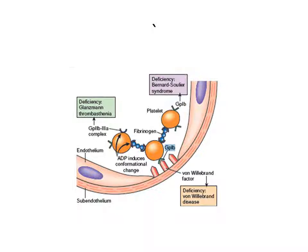In this picture from Robbins, you can see the vessel wall. The inner side is lined by endothelial cells. Under the endothelium there is sub-endothelial tissue. In the lower part of the picture, two endothelial cells have a space between them — there is some trauma — and due to this endothelial injury, the sub-endothelial structures are exposed to the blood.